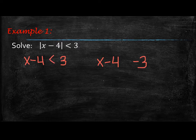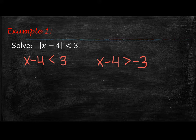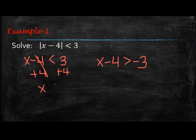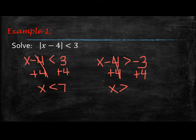But when you flip it to the opposite — negative 3 — you also need to flip the inequality the other direction. So we're going to go ahead and solve it now. We're going to add 4 to both sides, and that gives me x is less than 7. Over here, when I add 4 to both sides, we get x is greater than 1.